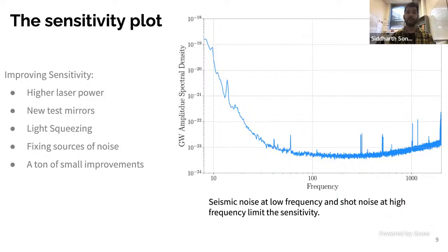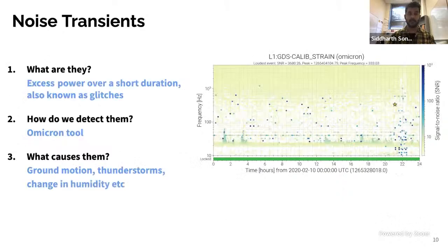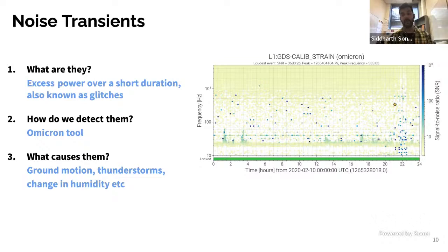Coming back to the sensitivity plot: we have seismic noise dominating at low frequency, because the Earth is constantly shaking. At higher frequencies we have shot noise, a type of quantum noise due to uncertainty in the number of photons hitting the photodetector — that's why we have light squeezing to reduce it. Shot noise and seismic noise are Gaussian and stationary; they don't change from morning to evening or month to month. But we also have non-Gaussian, non-stationary noise, which we call transients, and I'll spend a lot of time on these.